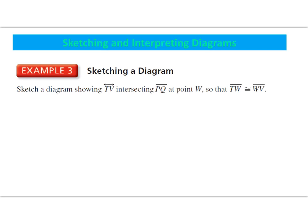So sketch diagrams showing line TV intersecting segment PQ at point W, so that segment TW is congruent to segment WV. So start by drawing line TV and labeling points T and V.